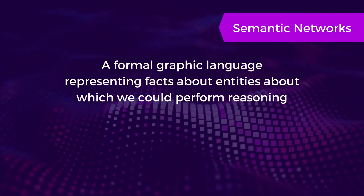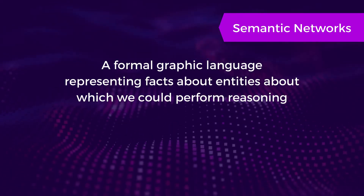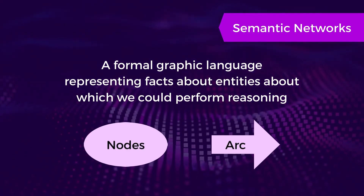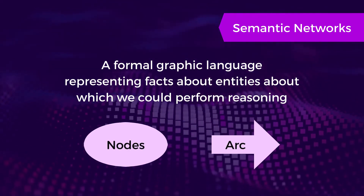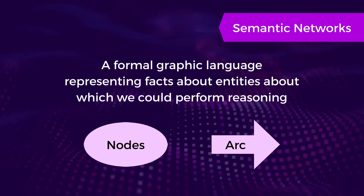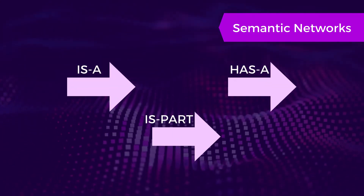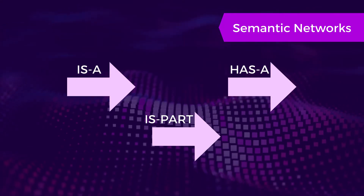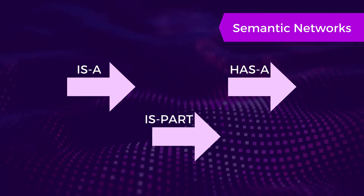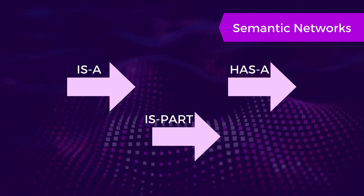A more common technique of knowledge representation is semantic network. Semantic network is a formal graphic language representing facts about entities about which we could perform reasoning. It shows hierarchical relationships between objects using nodes and arcs. The nodes represent objects and the arcs represent the relationships between objects. The two common arcs used are 'is a', used to show class relationship, and 'has a', used to identify characteristics or attributes of the object nodes. Other arcs are used for definitional purposes only.